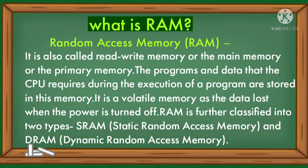What is RAM? Random Access Memory. It is also called Read-Write Memory, or the Main Memory, or the Primary Memory. The programs and data that the CPU requires during the execution of a program are stored in this memory. It is a volatile memory, as the data is lost when the power is turned off.